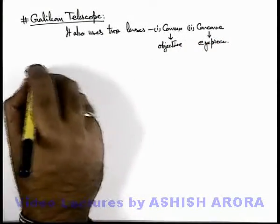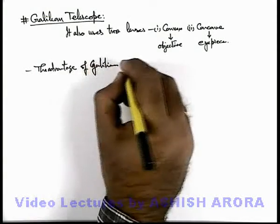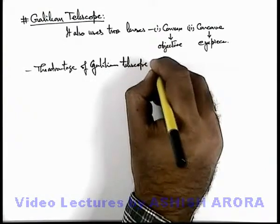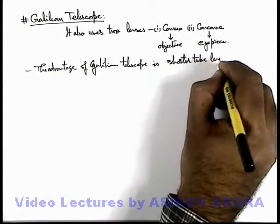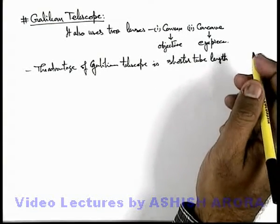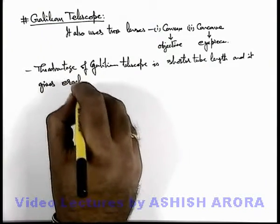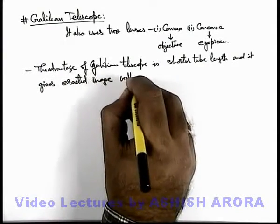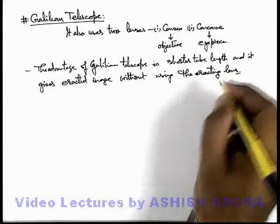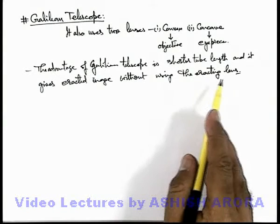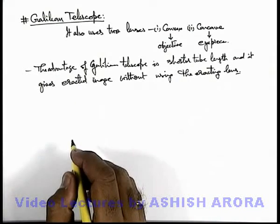Here we can also write the advantage of the Galilean telescope. The first advantage is a shorter tube length compared to a terrestrial or refracting telescope. And it gives an erected image without using the erecting lens, which we were using in case of a terrestrial telescope. We have discussed that in a terrestrial telescope we use an intermediate erecting lens to invert the first image so that the final image produced will be erected.